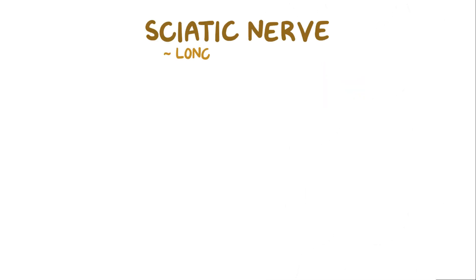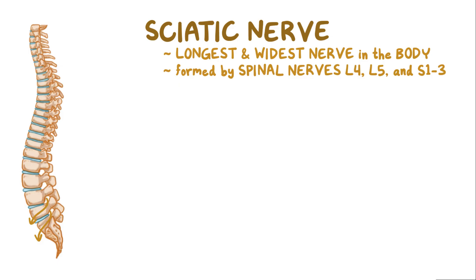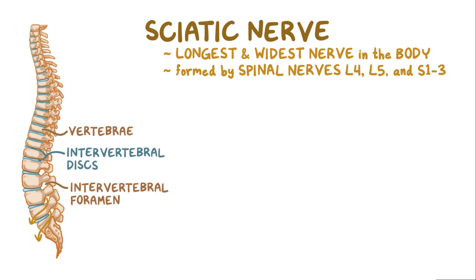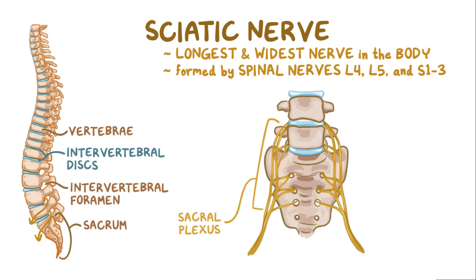The sciatic nerve is the longest and widest nerve in the body. It's formed by the spinal nerves L4, L5, and S1, S2, and S3, which leave the spinal canal through the intervertebral foramen, an opening located between the vertebrae and behind the intervertebral discs. These nerves travel to the area in front of the sacrum and join to make the sacral plexus.